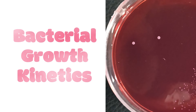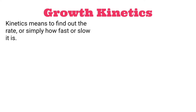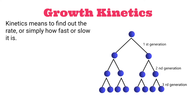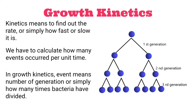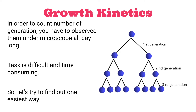When we talk about kinetics — like enzyme kinetics, microbial death kinetics, or growth kinetics — our aim is always the same: to find out the rate, or simply how fast or slow it is. For this, you have to calculate how many events occur per unit time, and here an event means the number of generations, or simply how many times bacteria have divided. The problem is the task is very difficult — you would have to observe a bacterium under a microscope all day long, which is not possible. Let's try to find an easier way.